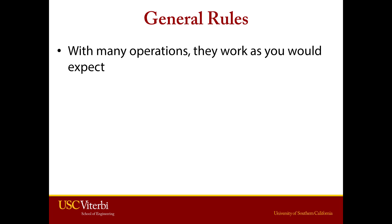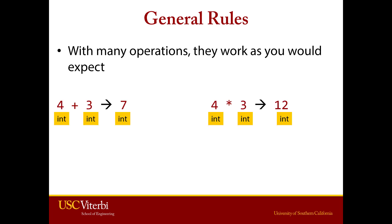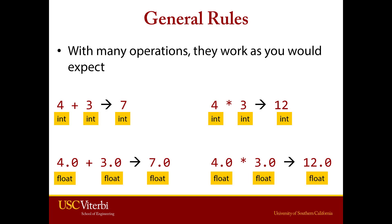Now let's look at a couple general rules about how numbers work in Python. If we have 4 plus 3 you get 7, and 4 times 3 you get 12. Notice that int plus int is int, and int times int is int. Similarly, 4.0 plus 3.0 gives 7.0. The general rule is that if you have an int and you add an int, or a float and you add a float, you're going to get the same type. This rule applies to addition, subtraction, and multiplication.